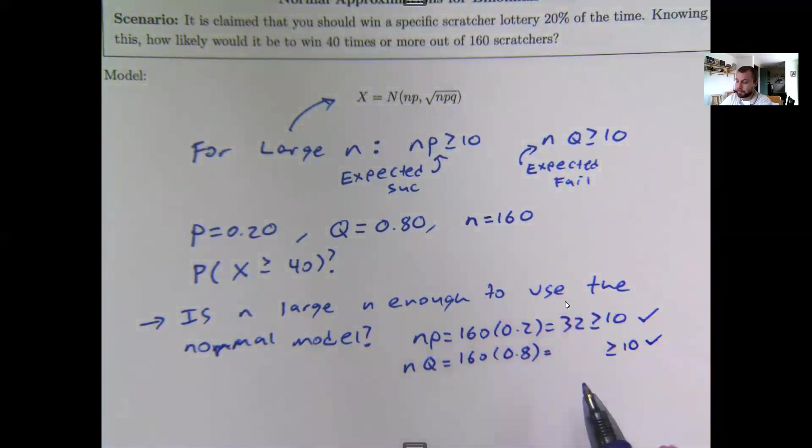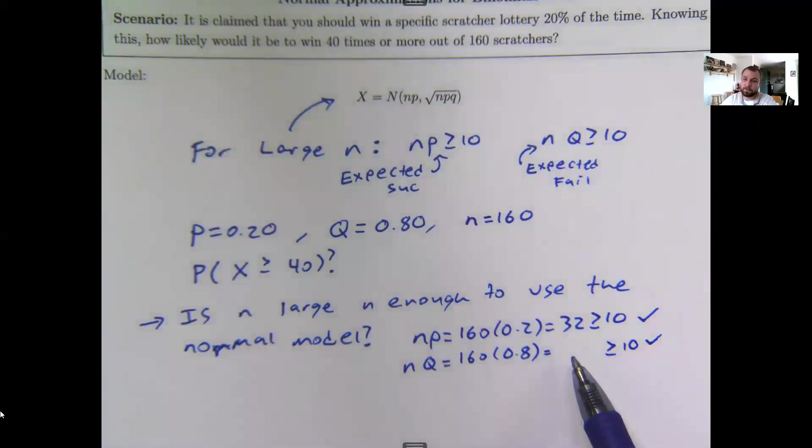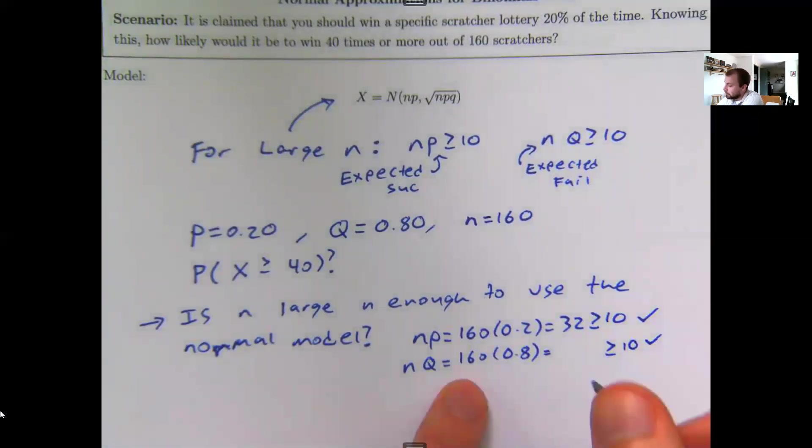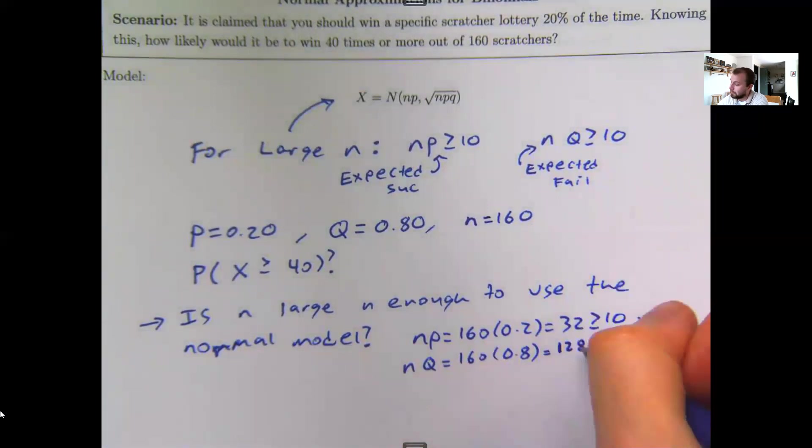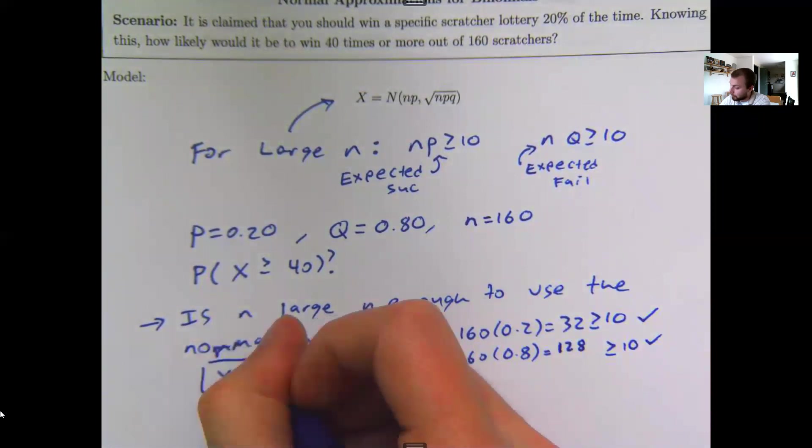But just as an observation, your expected number of successes, your expected number of failures should add up to your total number of trials. So if you type this into your calculator, I believe you get something like 128 or so, because the two of these numbers together add up to 160. Just a little trick to double check your math as you go along. So yes, it is large enough to use the normal model.